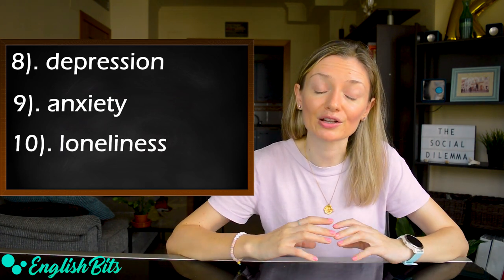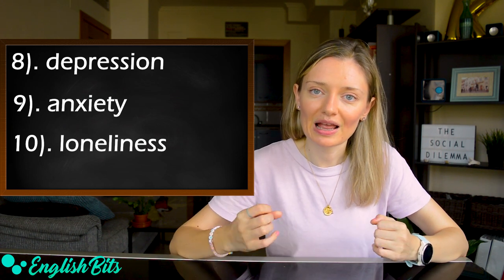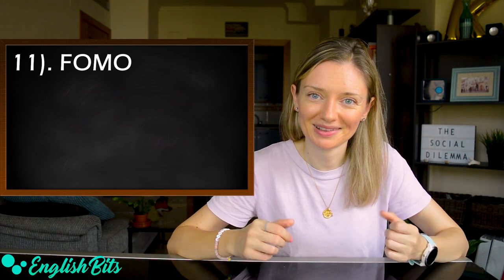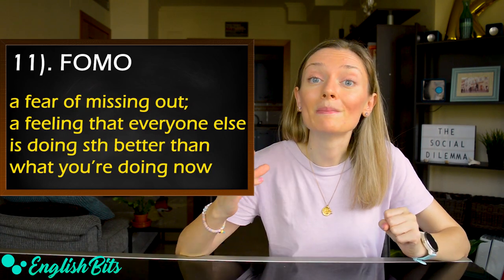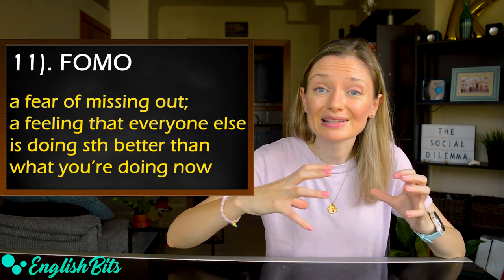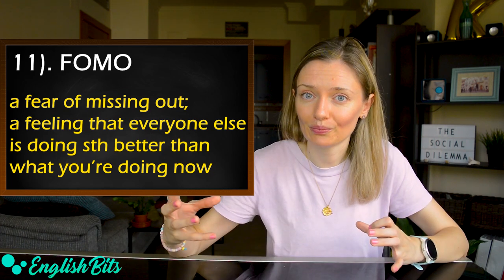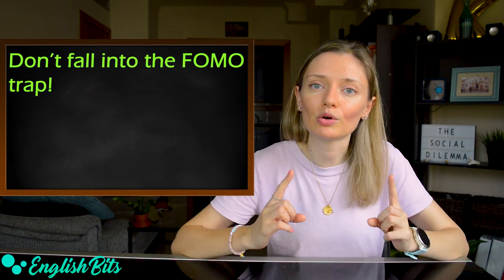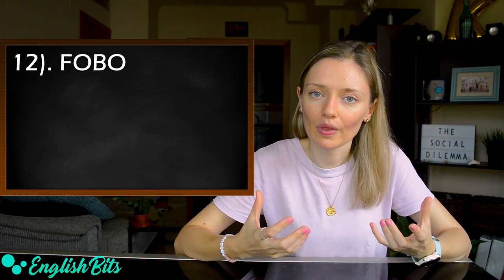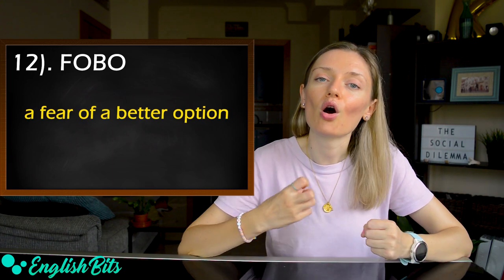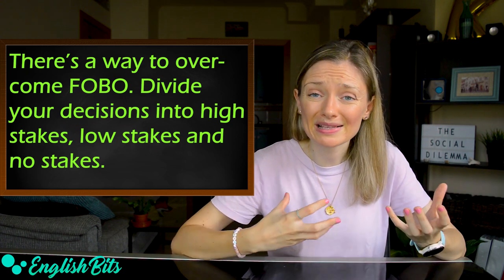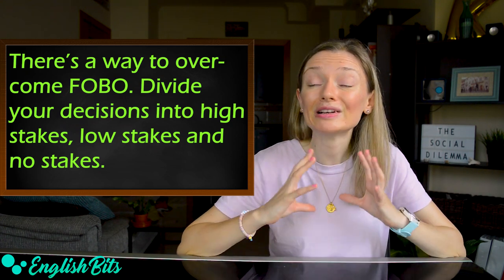And to finish, we're going to look at two more negative consequences. Number eleven: FOMO. What is FOMO? FOMO is short for fear of missing out, and it's a feeling that everyone else is doing something better than what you're doing now. For example, don't fall into the FOMO trap. And last but not least, number twelve: FOBO — fear of a better option. We live in a world of overwhelming choice that makes us overanalyze even simple decisions.